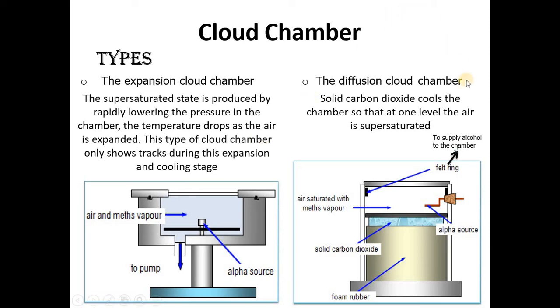And the second one is diffusion cloud chamber. Solid carbon dioxide cools the chamber so that at one level the air is supersaturated. We have an alpha source and solid carbon dioxide. Air is saturated with mass vapor. This type of cloud chamber is known as diffusion cloud chamber.